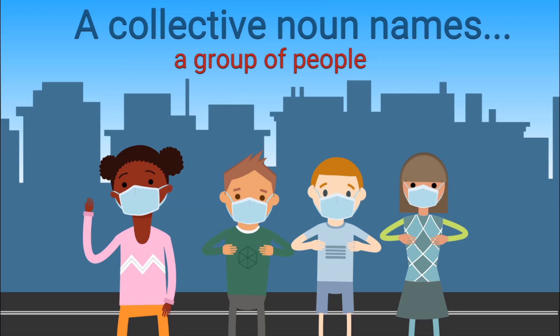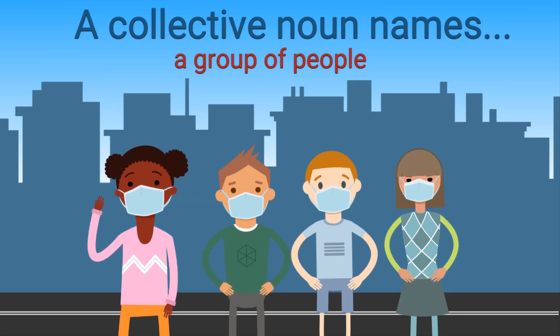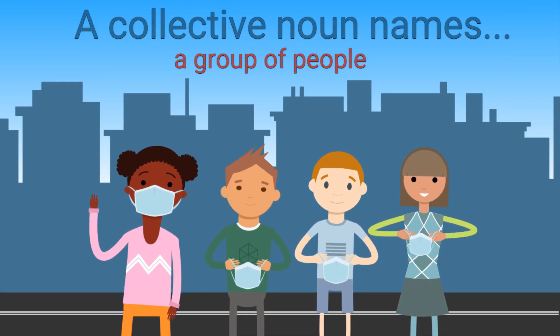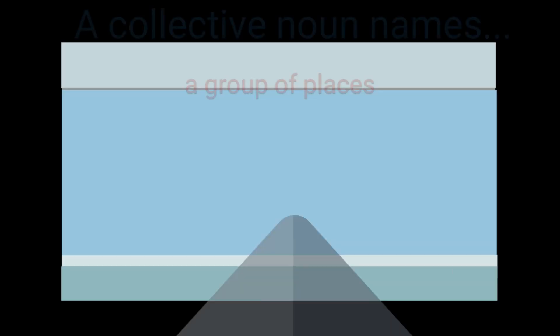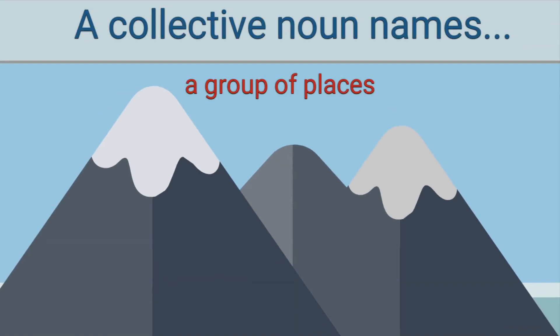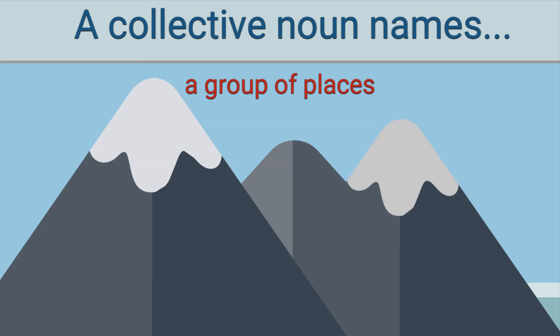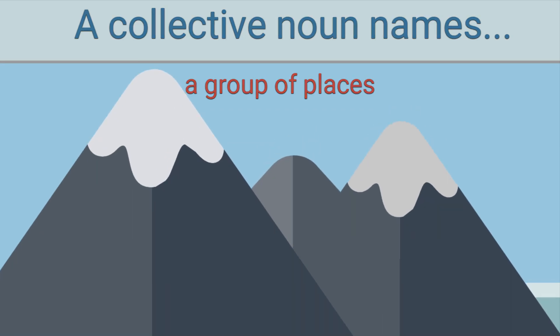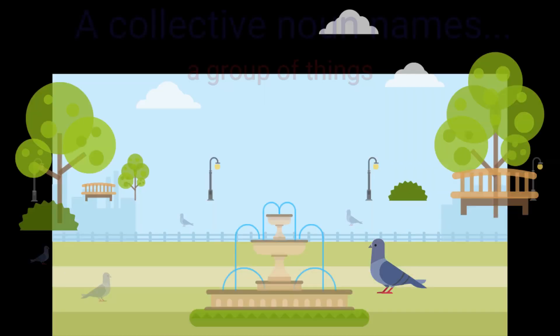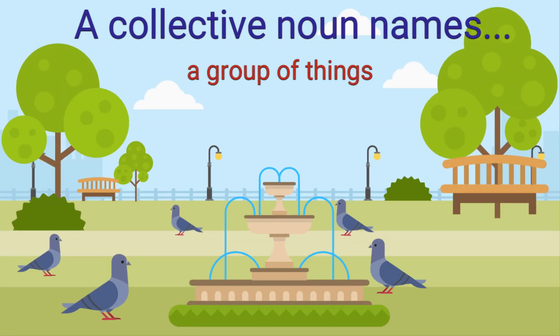A collective noun names a group of people. A collective noun can also name a group of places. And a collective noun can name a group of things.